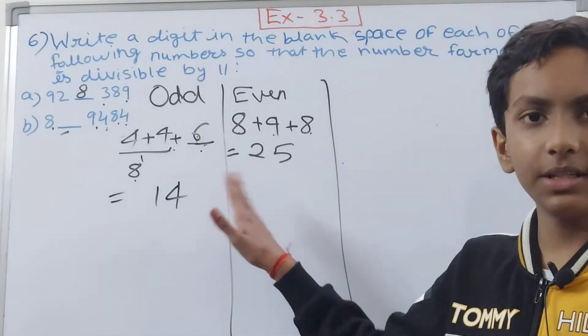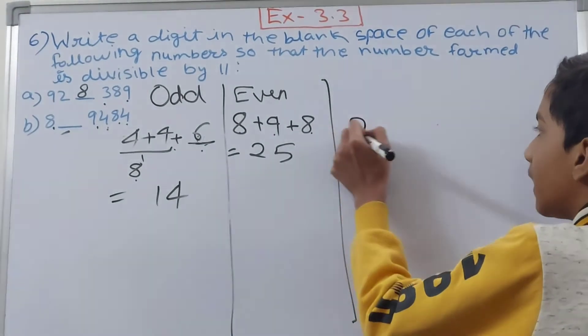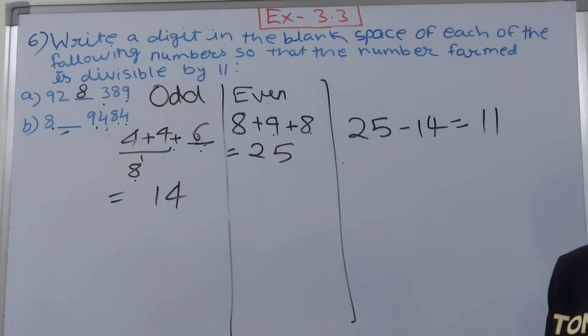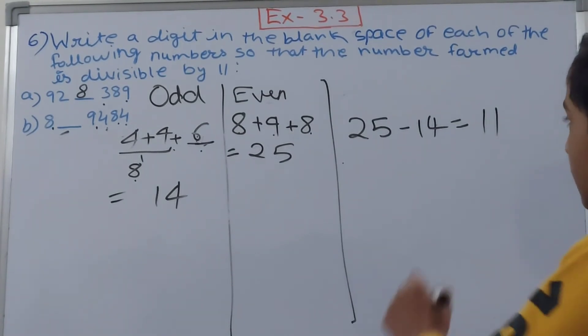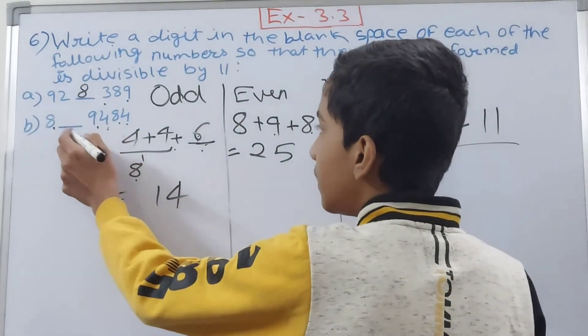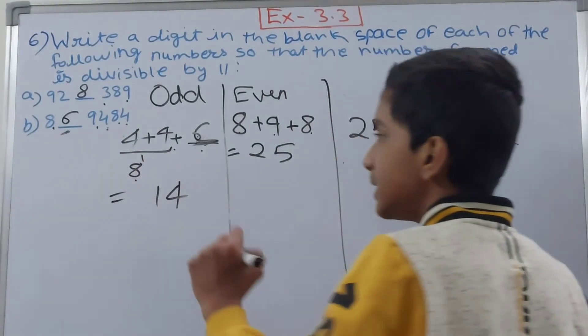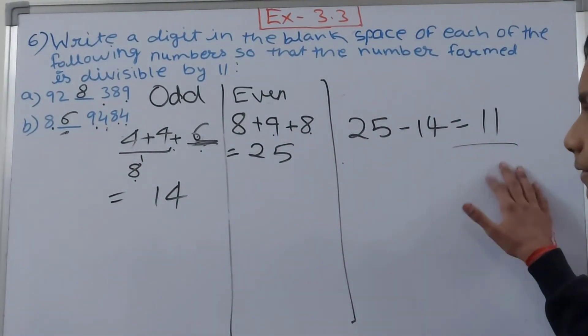Now you will find their difference: 25 minus 14 is 11. That means we have got our answer. In this blank the digit we will write is 6. This is how we have solved the sixth question.